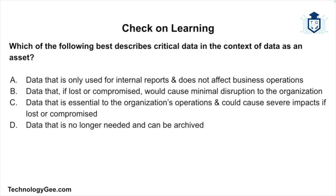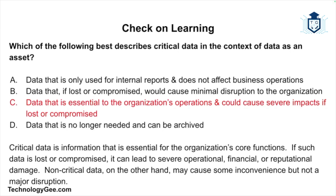Check on learning — Question 1: Which of the following best describes critical data? Is it data only used for internal reports? Data whose loss causes minimal disruption? Data essential to the organization's operations that could cause severe impacts if lost or compromised? Or data that can be archived? The correct answer is: data that is essential to the organization's operations and could cause severe impacts if lost or compromised. Critical data loss can lead to severe operational, financial, or reputational damage, while loss of non-critical data may cause inconvenience but not a major disruption.